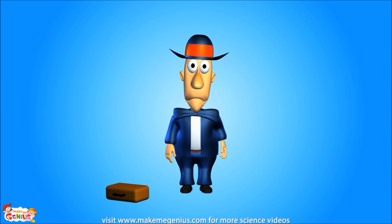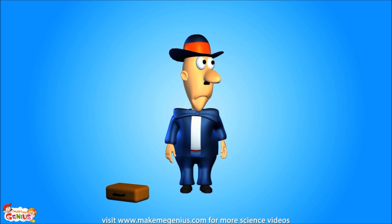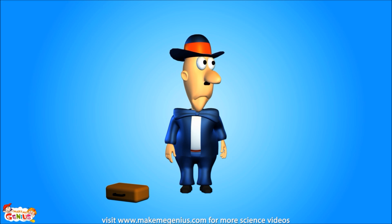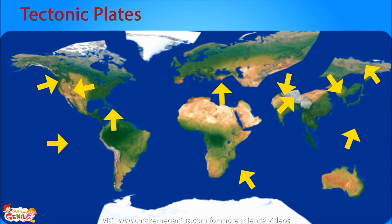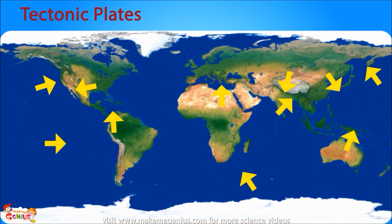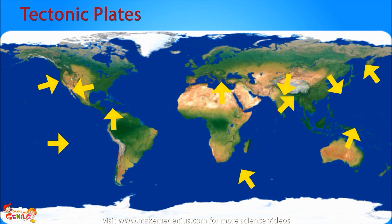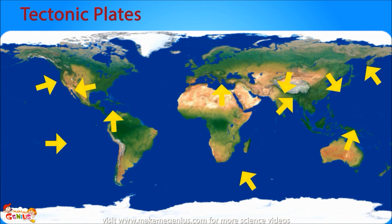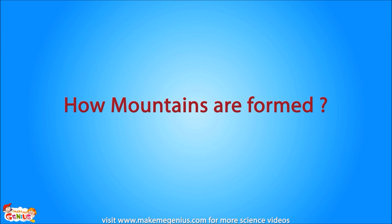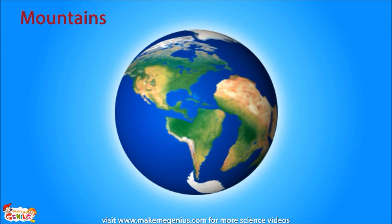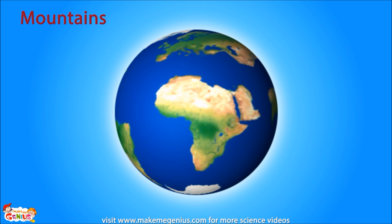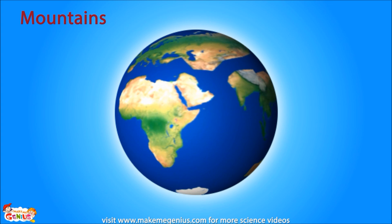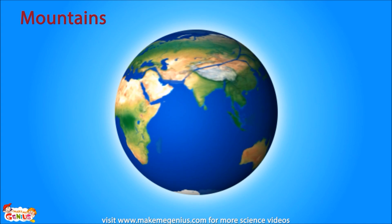Even though tectonic plates move very slowly, this slow movement creates the world as we know it. It can also sometimes cause a lot of havoc and problems. The whole landscape around us is a result of the movement of tectonic plates. This movement can cause earthquakes, volcanoes, mountains, and trenches. Let me explain in detail. Land features such as mountain formations and events such as earthquakes happen due to the continuous movement of the tectonic plates. As these plates keep moving around the Earth's surface, they shape our world.